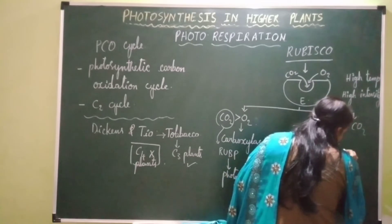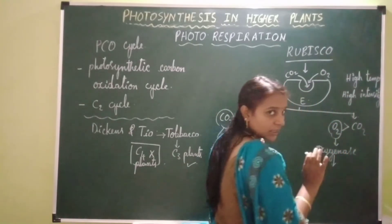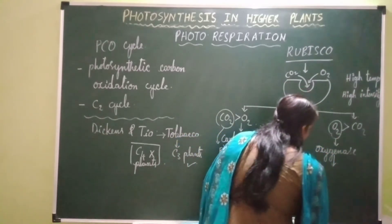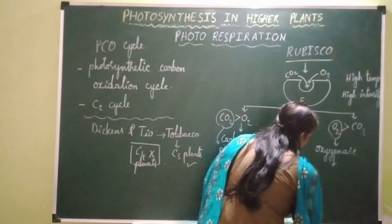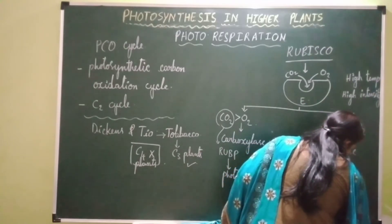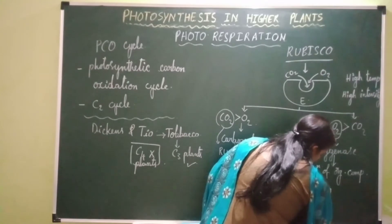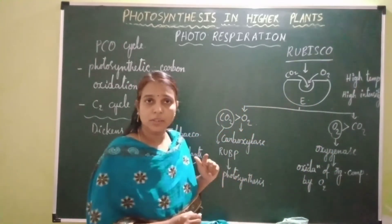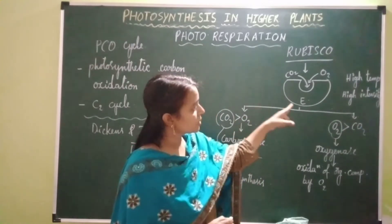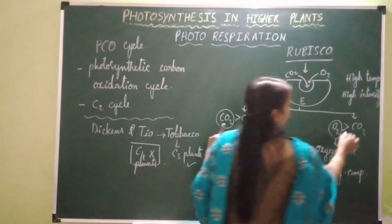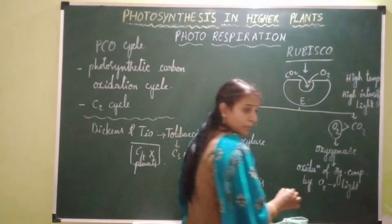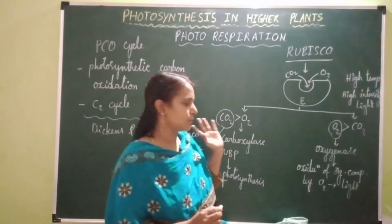When Rubisco functions as oxygenase, it causes the breakdown or oxidation of organic compounds by oxygen. Breakdown of organic compounds by oxygen is called respiration — aerobic respiration. Since this breakdown takes place in the presence of sunlight, it is called photorespiration.